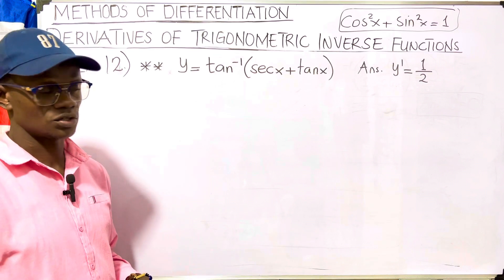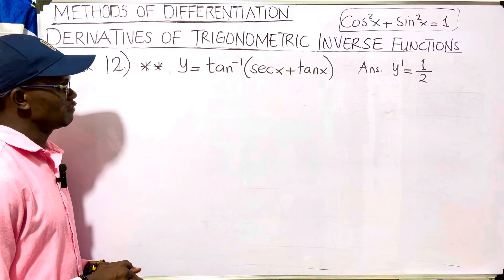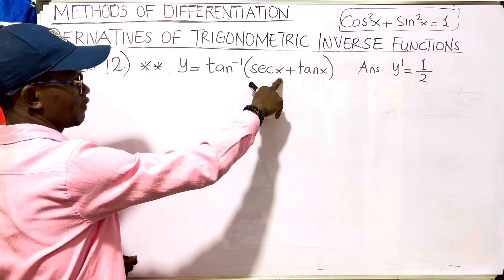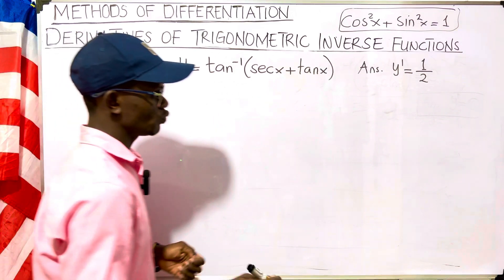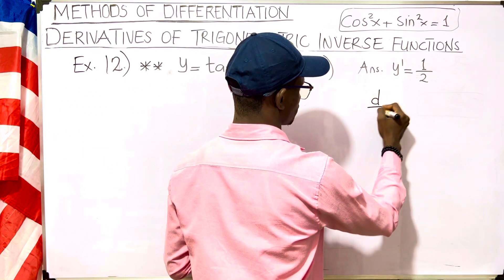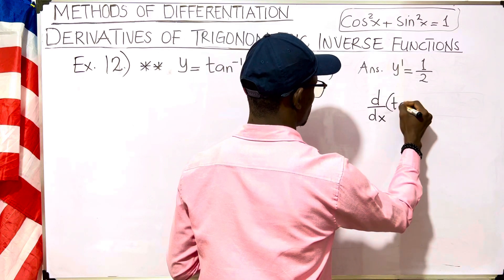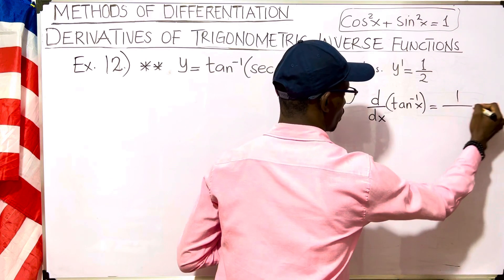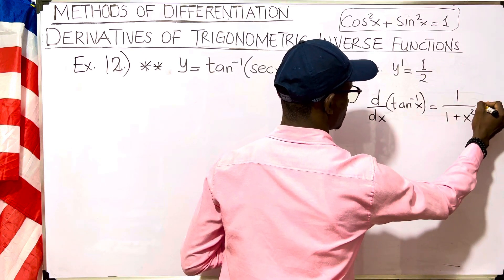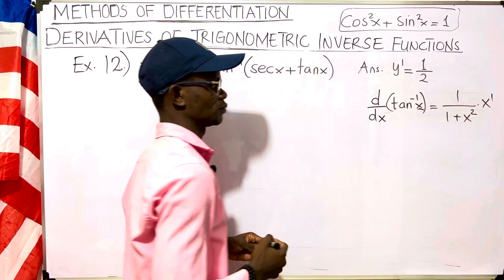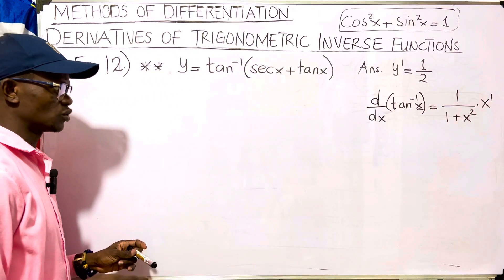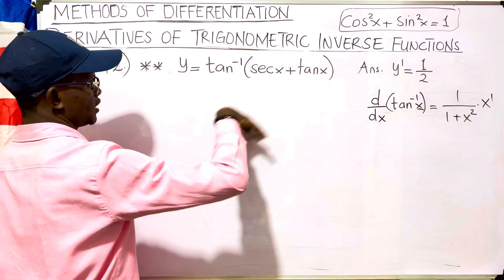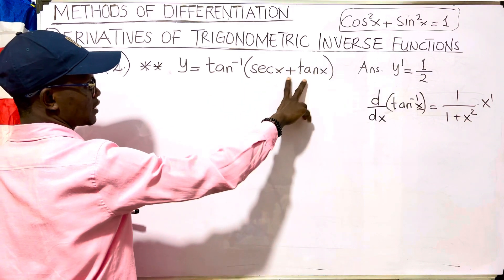We have y equals tangent inverse of secant of x plus tangent of x. What we know is that the derivative of tangent inverse of x is equal to 1 over 1 plus x squared, times the derivative of x. That is exactly what we know, and we are going to use that now to find the derivative of tangent inverse of secant x plus tangent x.